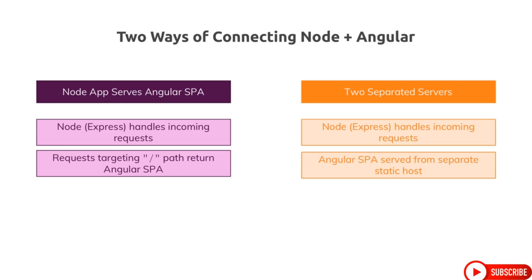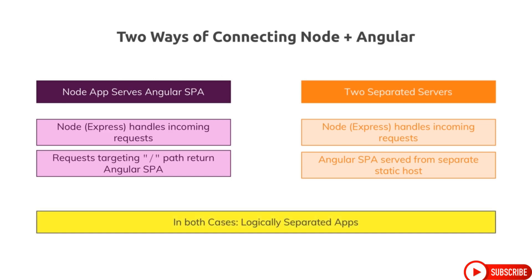In both cases, we have logically separated apps. Even if we use one Node server for both serving the Angular app and hosting our core business logic, Angular handles the UI and sends background requests, and Node Express handles those background requests and does something with them. The only difference in the left approach — where we also serve the SPA — is that we have one special route where we return the Angular app. Besides that, there is no strict connection. Because what we build is a RESTful API with our Node Express backend.